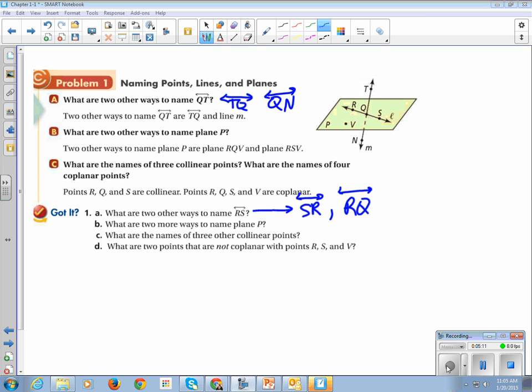B says, what are two more ways to name plane P? So with a plane, I need three capital letters. So plane P could be VRS or RSV or VQS. I just need three points on that plane. Why didn't I use T or N? Because they're not on the plane. They're not on the plane. Don't use them.